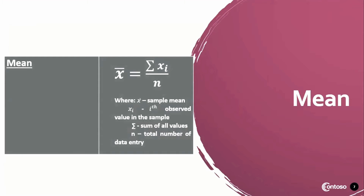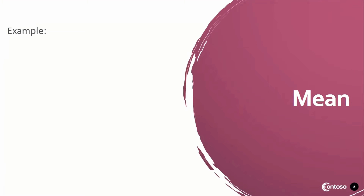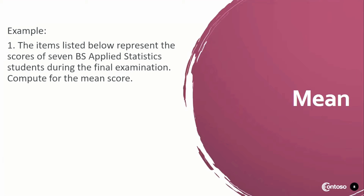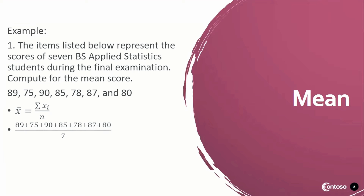Here are a few examples where we can apply the formula for the mean. The items listed below represent the scores of 7 BS Applied Statistics students during the final examination. Compute for the mean score. The data are 89, 75, 90, 85, 78, 87, and 80. By using this formula, we're going to add all the data entry divided by the number of data entry.